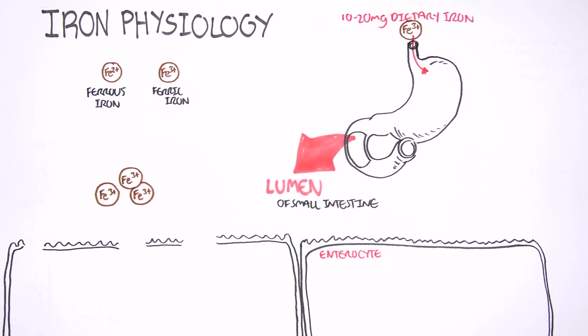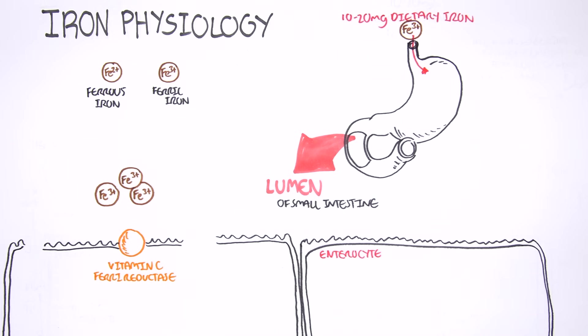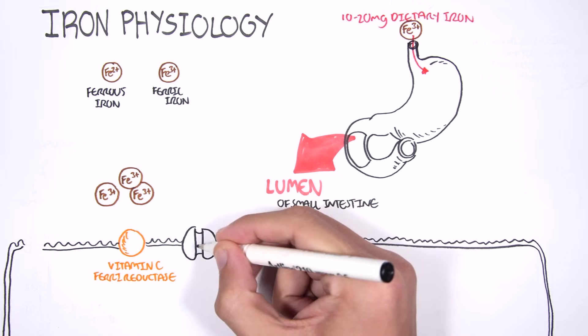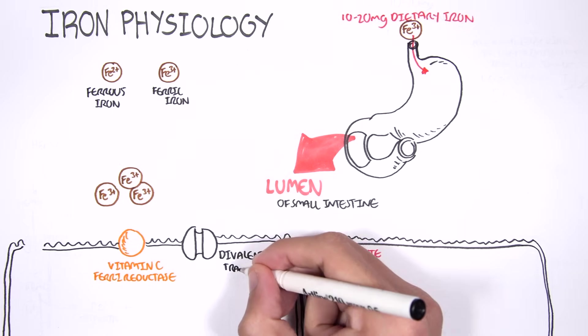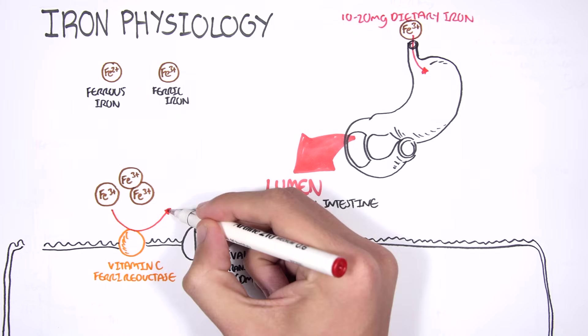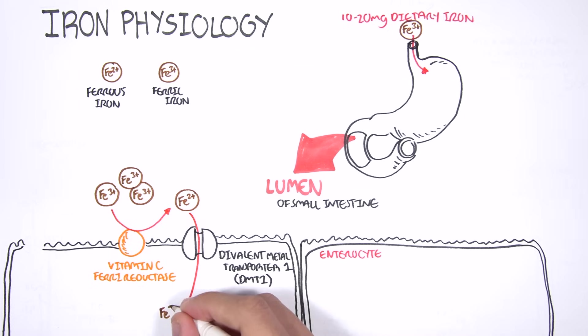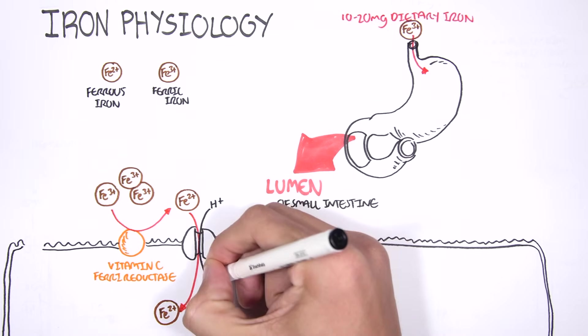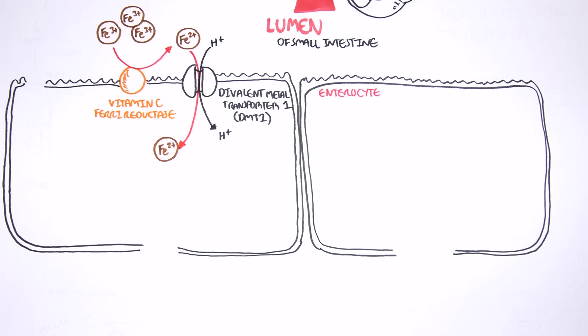But the thing is, we cannot actually absorb iron in the ferric form. It has to be converted to ferrous iron. And so what happens is, we have an enzyme on the top of our enterocytes, on the apical surface, known as vitamin C ferroreductase. And to add to this, on the apical side, we also have the iron transporter, known as the divalent metal transporter 1, or DMT1 for short. And this is a co-transporter. So, the ferric iron gets reduced by vitamin C ferroreductase to the ferrous iron. And then it's in the ferrous iron form that it is able to be absorbed by the enterocyte through the DMT1 channel. And the DMT1 is a co-transporter, so hydrogen is also taken in.